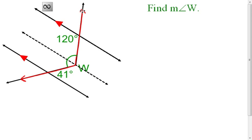So I've put a line in here, and I'm going to say that it's parallel to the two that we have. Now what I can do is focus on two of the three lines at a time. I'm going to look at this line, this line, and this transversal — let that be my transversal.